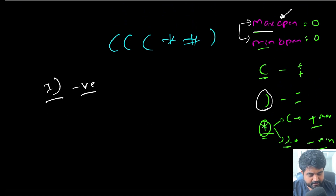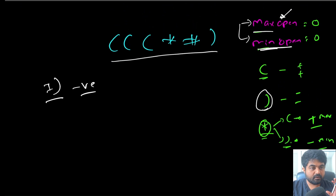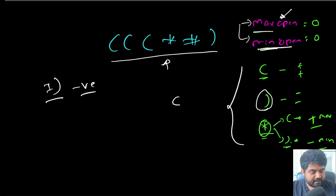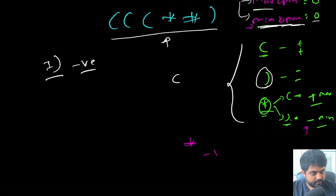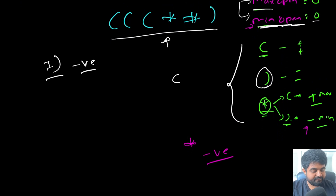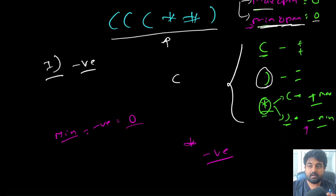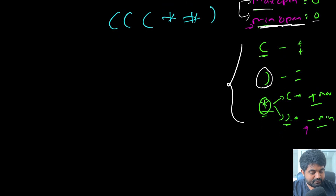Second, at the end of iteration, if `min_open` equals zero, we return true — there are no leftover unmatched open parentheses. Additionally, `min_open` can go negative when we treat a star as a closing bracket, but that doesn't mean the string is invalid. So whenever `min_open` goes negative, we simply reset it to zero.